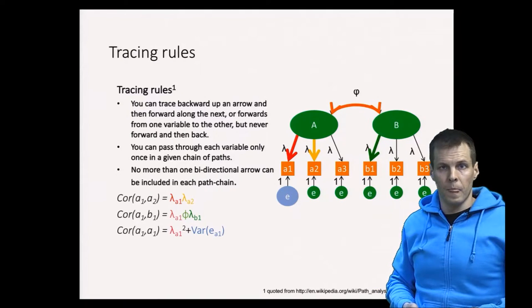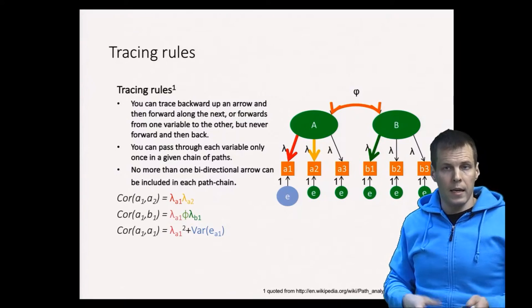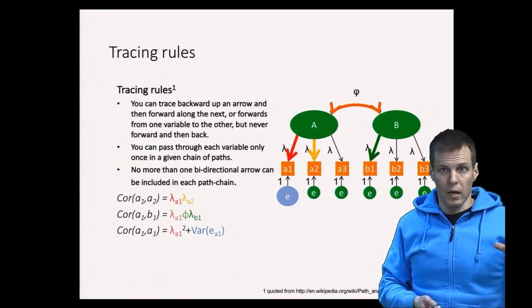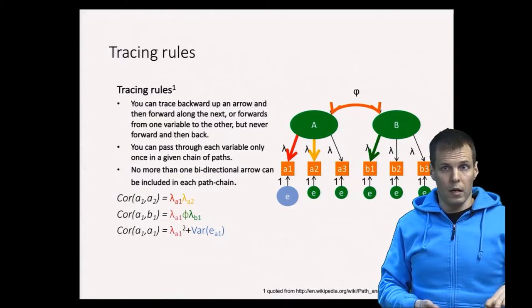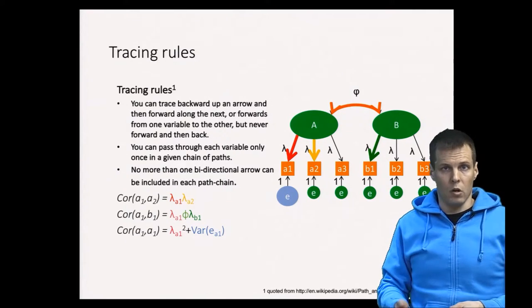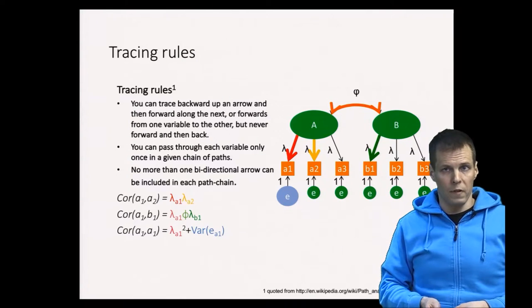How we estimate this model is that we calculate a model-implied correlation between all indicators and try to adjust the model so that the correlations match the observed data.